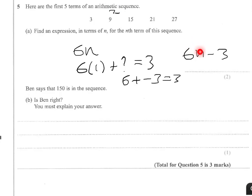Does it give me 9? 6 times 2 minus 3. 6 times 2 is 12. 12 take away 3 is 9. So 6n minus 3 is your nth term expression.